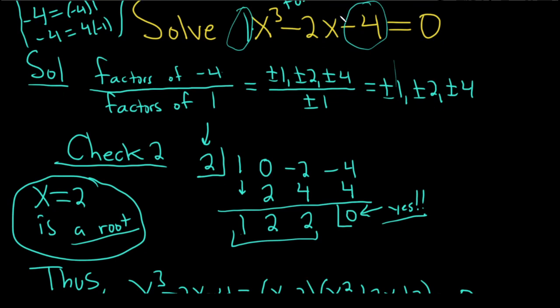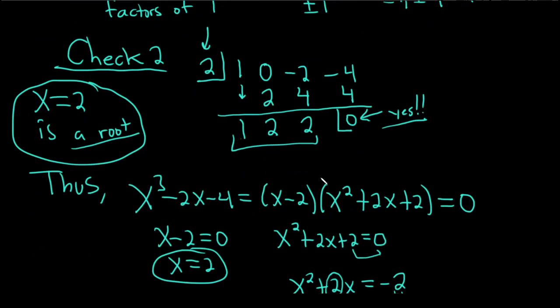Then this tells you that you can factor your original polynomial equation as x minus 2, because whenever 2 is a root, x minus 2 is a factor. Times what's left. We got that via the division process. And you always start at 1 less. This is cubed, so you want to start at 2. If this was a 5, you start at 4. So it's 1 less. 1x squared plus 2x plus 2.